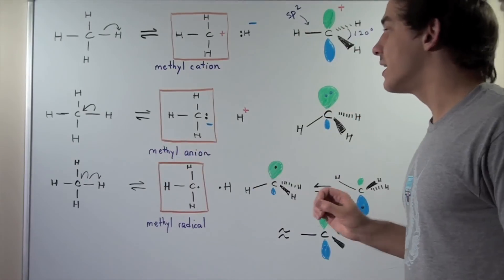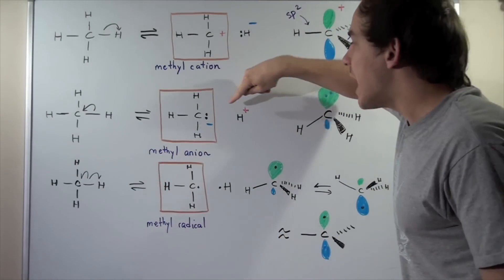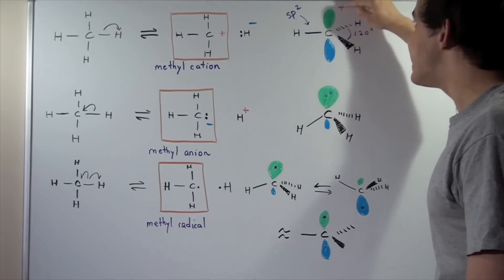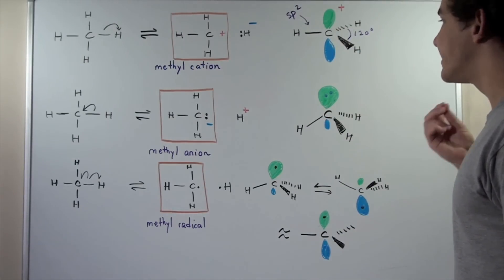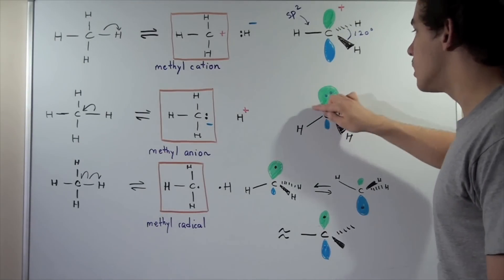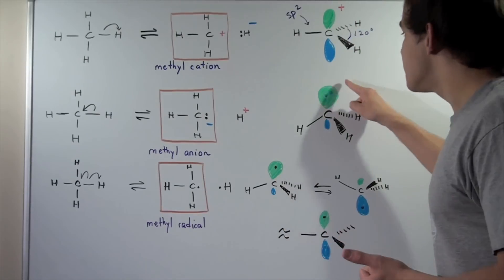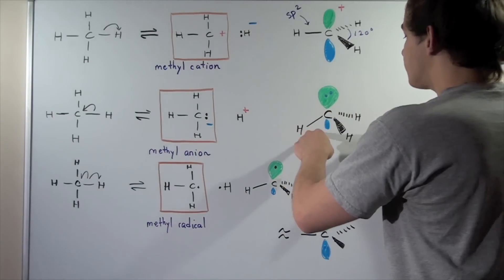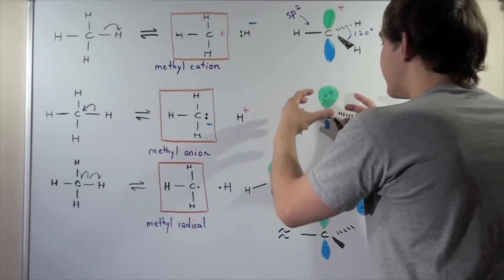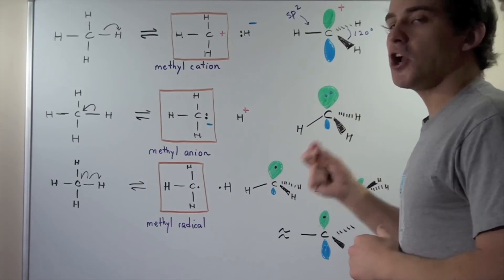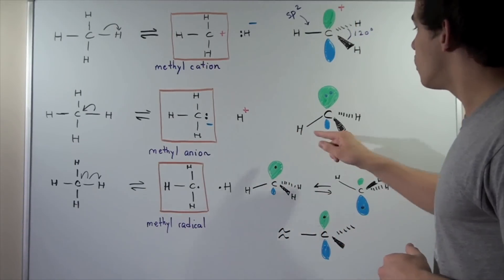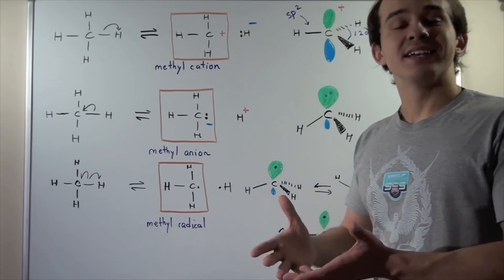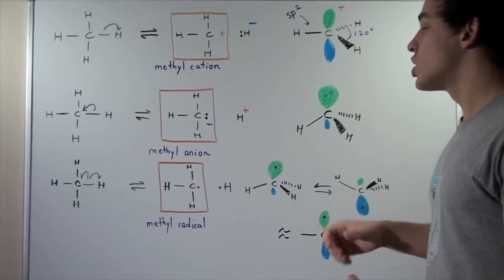Now let's look at the methyl anion. We have a similar picture, but now we have a pair of electrons within the 2P orbital. That pair of electrons is found within the orbital's positive region, and we are no longer going to have SP2 hybridized orbitals. This pair of electrons acts as if it were a bond, increasing the negative charge and electron density, which causes the CH bonds to move downward in an umbrella-like fashion. So the methyl anion is very close to SP3 hybridized, and this pair of electrons tends to act as a Lewis base, donating the two electrons to some other atom.